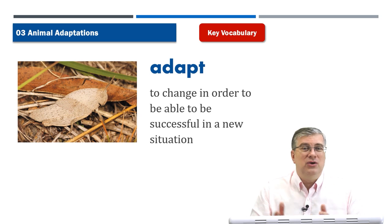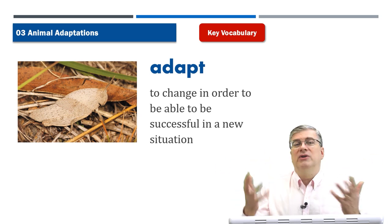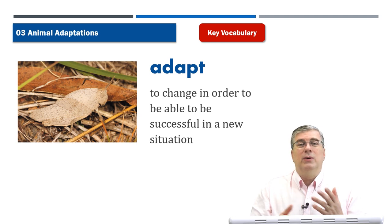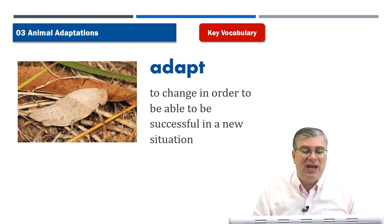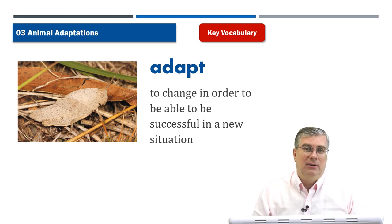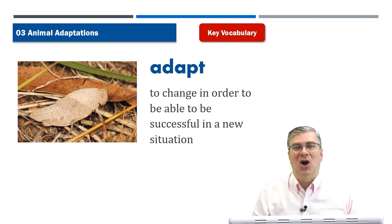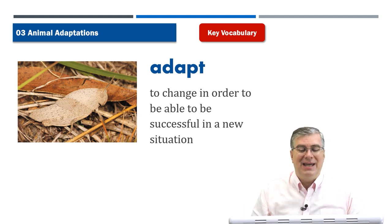Animals and living creatures do this all the time, because the environment is always changing around us. We adapt to our environment because we want to be successful. If we don't change, we won't be successful. Some people say change or die — that's a natural law. If living creatures don't change, many of them will die. They have to change to be successful in their new environment.